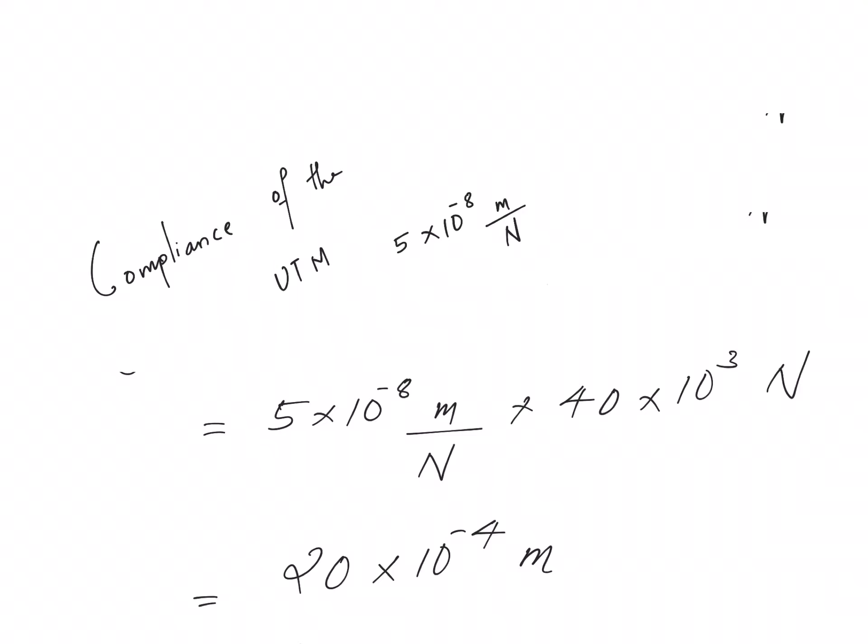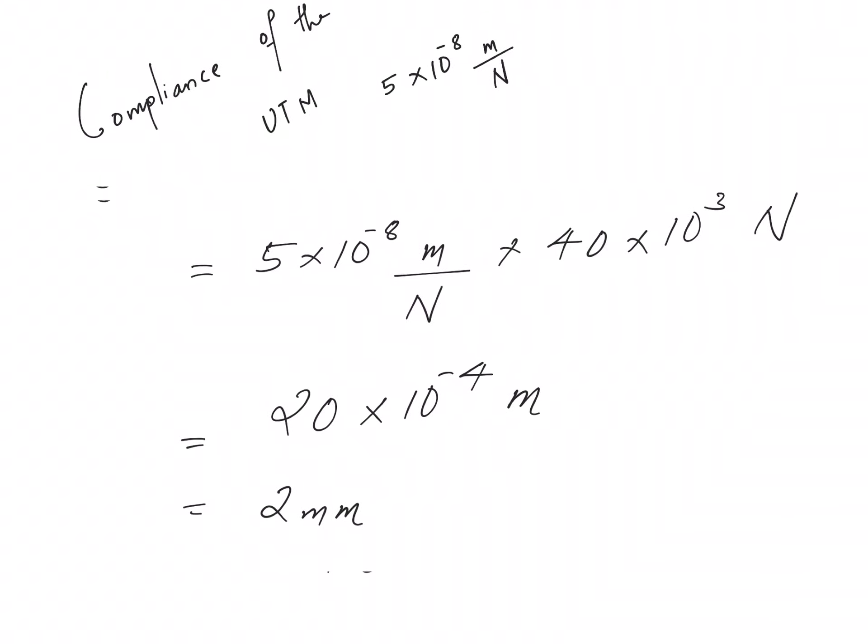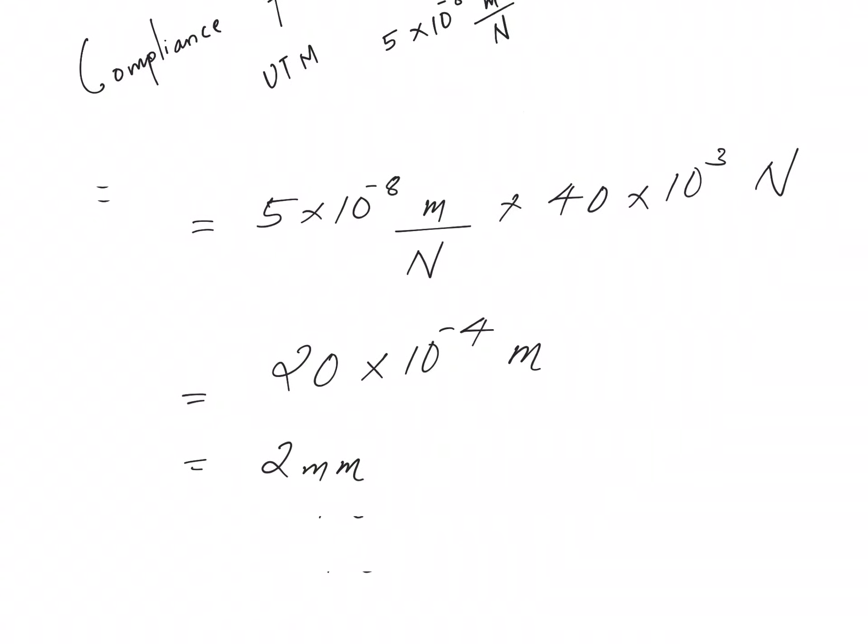Be careful with the units. This compliance can be utilized to evaluate the deformation within the universal testing machine. How? We can multiply the compliance with the amount of load applied, as shown over here. So that amounts to something like 2 times 10 to the power minus 4 meter, or in other words that amounts to something like 2 mm.